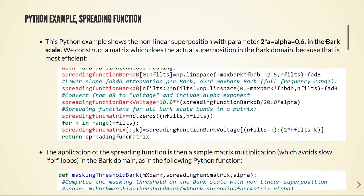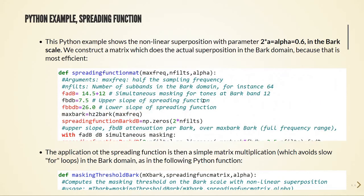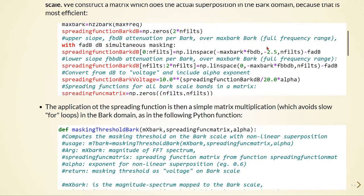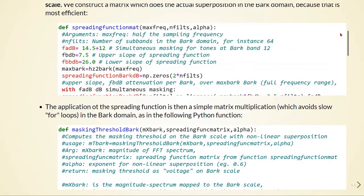The goal is to have a Python example that shows the non-linear superposition with a parameter alpha equals to 0.6 in the Bark scale. We'll construct a matrix which does the actual superposition in the Bark domain in a more efficient way. We'll have here a function called spreading function math that has some arguments and returns this spreading function matrix, and we'll look with more detail a bit later.